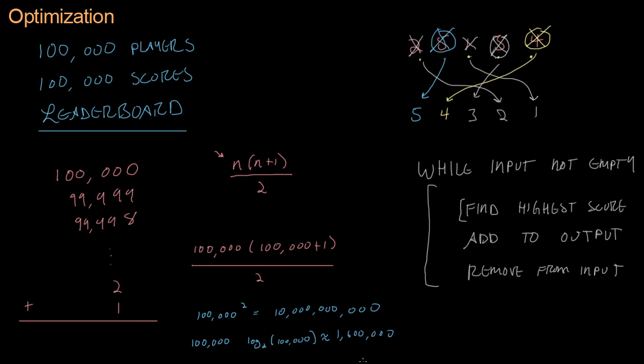1.6 million is a lot less than ten billion, so we would much prefer an algorithm that examines a few million pieces of data rather than ten billion. We expect the naive sorting algorithm to be something like a thousand times slower than heap sort. To demonstrate that, we're going to go to the code section and look at an insertion sort and a heap sort, and see how fast they are compared to each other.